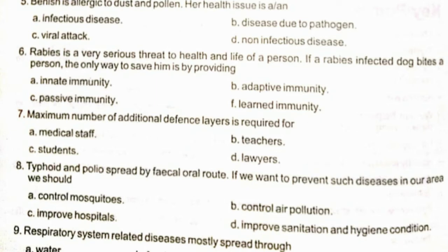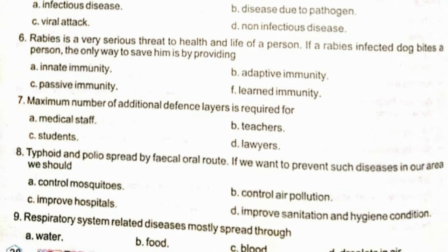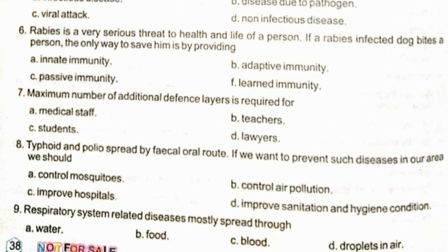The maximum number of additional defenses required is for students Option C: type. Polio spreads by the patient's oral route. If we want to prevent such diseases in our area, we should control air pollution. Option B: respiratory system related diseases mostly spread through droplets in air.